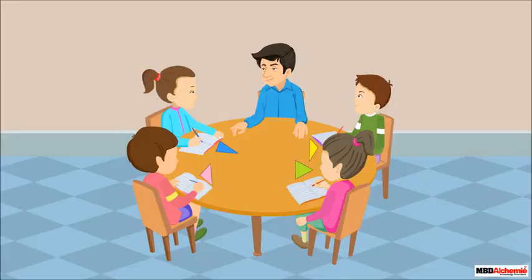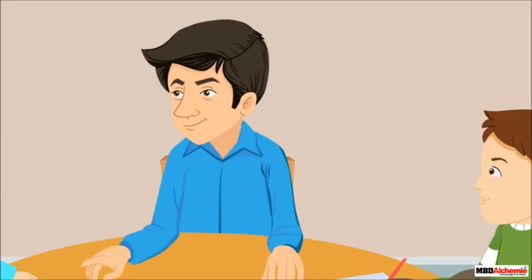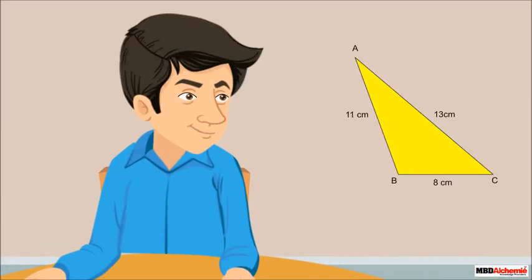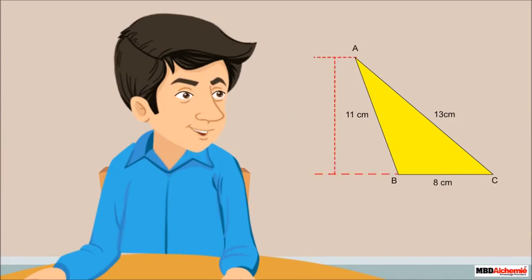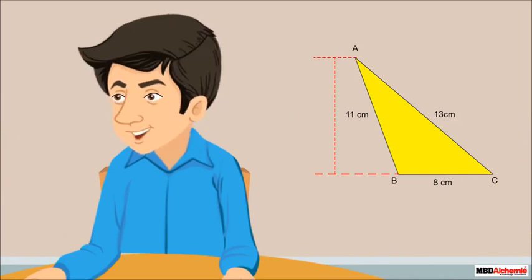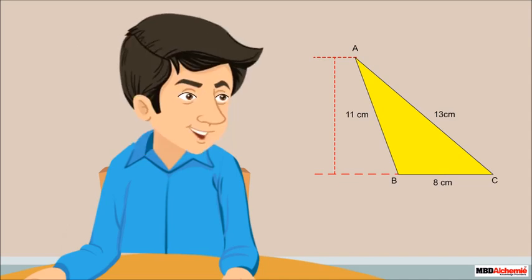They ask Neil's father. He says they can find the area of the triangle if they know its height, and to do so they need to construct a perpendicular on the base from the opposite vertex. However, this is a time-consuming task — to overcome this, they can use a formula instead.